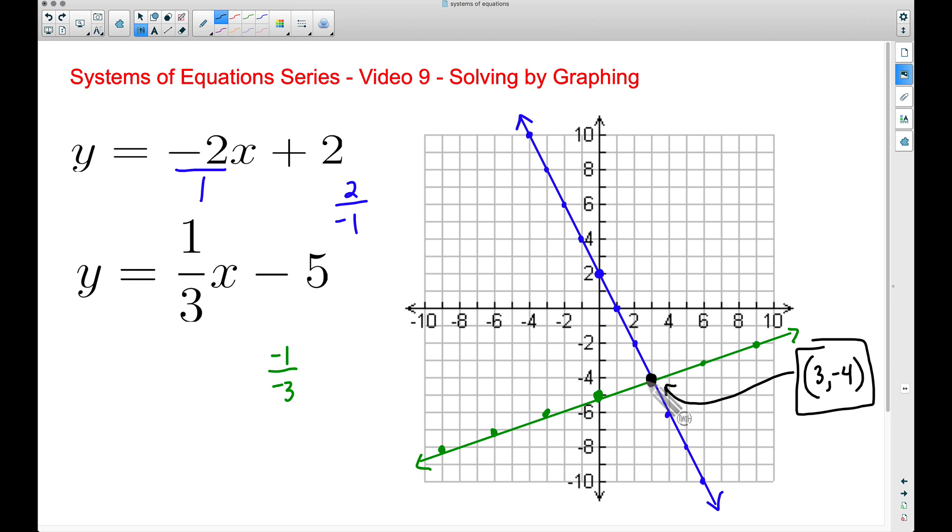Hence our solution, this intersection, 3, negative 4. And there you have it, solving a system of equations by graphing. The two equations we had here were in slope intercept form, but it could be common for you to see these equations given to you in standard form. You could still graph them, but we have looked at other techniques as well, such as the elimination method. The elimination method is perfect for solving a system when your equations are given to you in standard form.